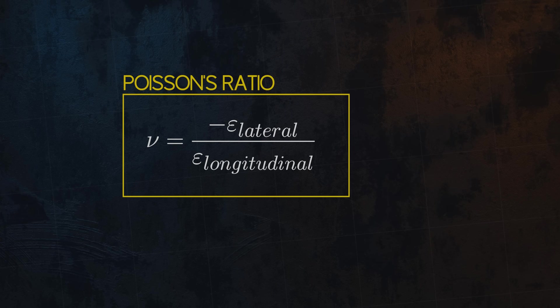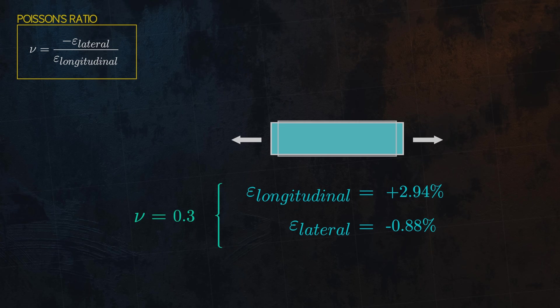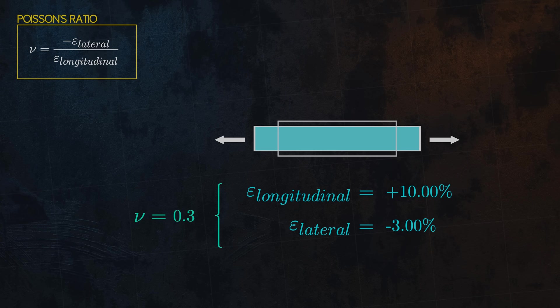You might be wondering why a minus sign slipped into the equation. Remember that by convention, tensile strains are positive and compressive strains are negative. The minus sign is just there so that for the typical case where the lateral strains are opposite in sign to the longitudinal strains, we get a positive Poisson's ratio.